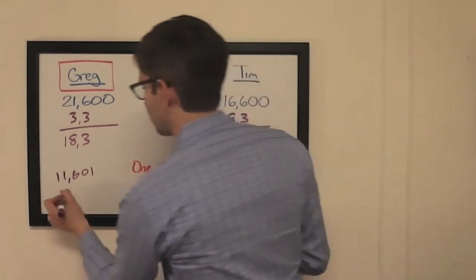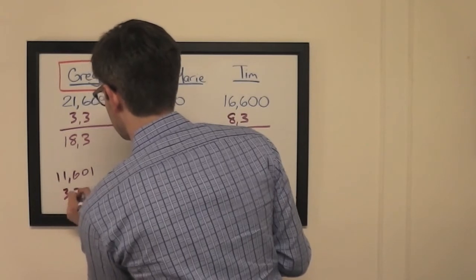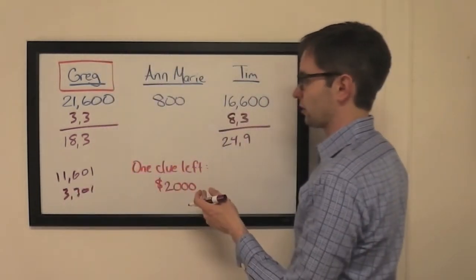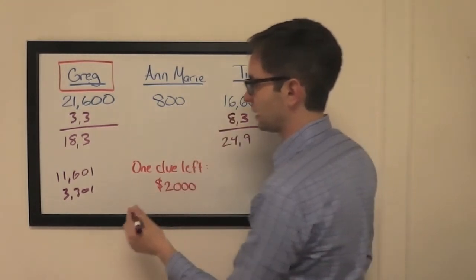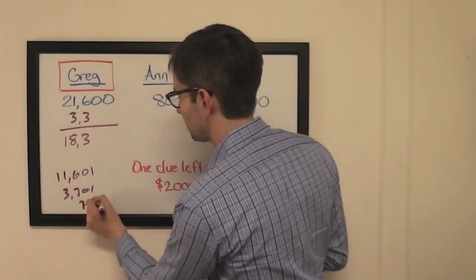So those are the two wagers I would recommend. There is that other option of, let's say Tim gets that $2,000 clue, add $4,000 again. So $7,301, also feasible.